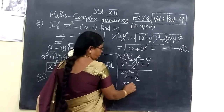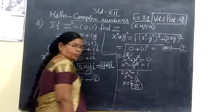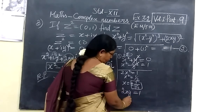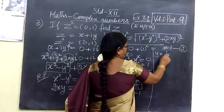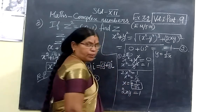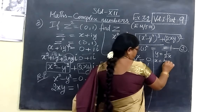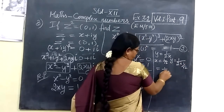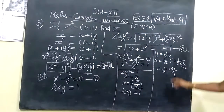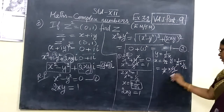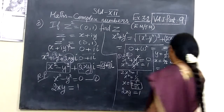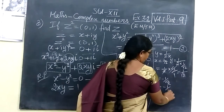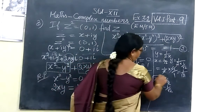Solving equations 1 and 2: adding them, 2x² = 1, so x² = 1/2, so x = ±1/√2. To get y, substitute in 2xy = 1, giving y = 1/(2x). When x = +1/√2, y = 1/(2 × 1/√2) = 1/√2. Similarly, when x = −1/√2, y = −1/√2. So we are getting 2 values.